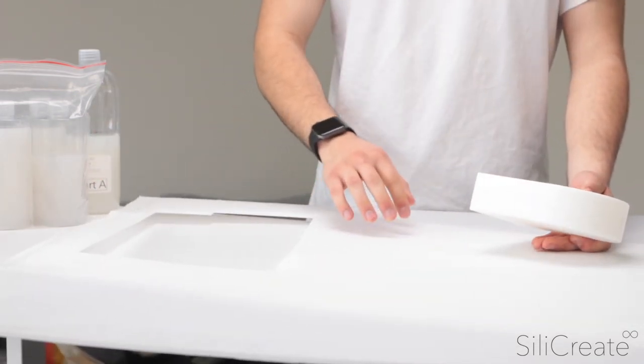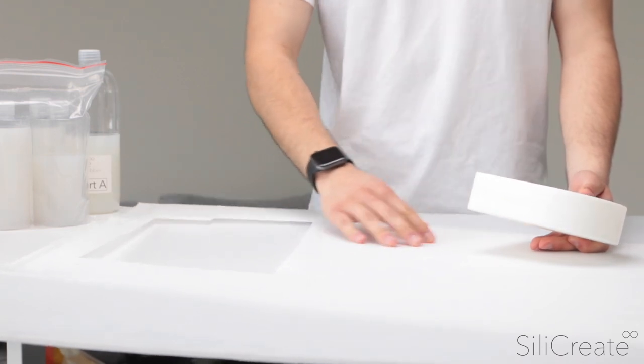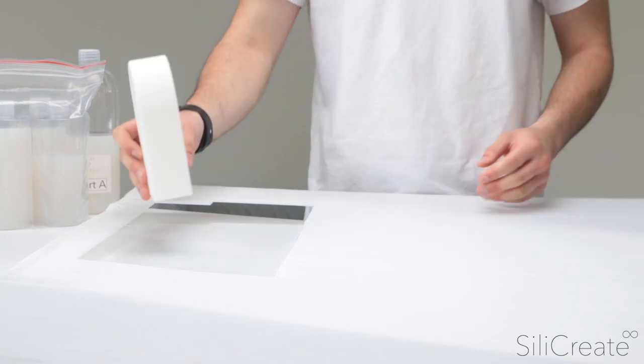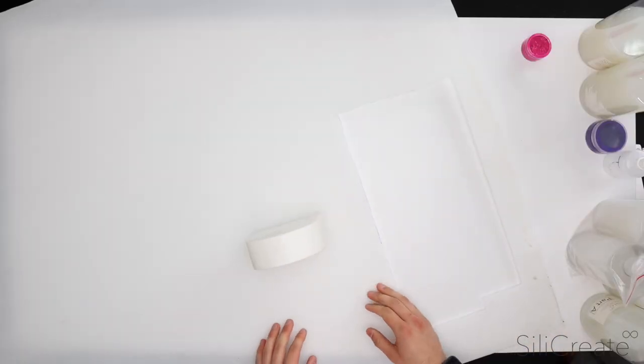I'm just going to be using it today to make the mold box just because it's cheap. And because it's plastic, it means when we pour the silicone rubber into it, it will not soak in like if we were to use cardboard or something like that. I'll just go ahead and cut out some panels.